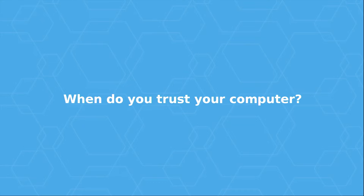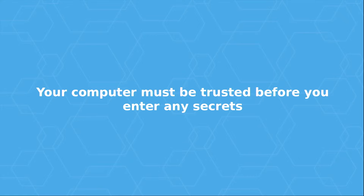Part of thinking about trustworthiness is knowing when we trust a computer. Up until the point where you start putting secrets into a computer, it doesn't matter whether it's trustworthy — it has no way to harm you. Secrets include passwords, passphrases, browsing history — anything you wouldn't necessarily wish to publish. To build a fully trustworthy platform, you need trustworthiness from the very beginning of the boot process. Before you enter any secrets, your computer must be in a trustworthy state.